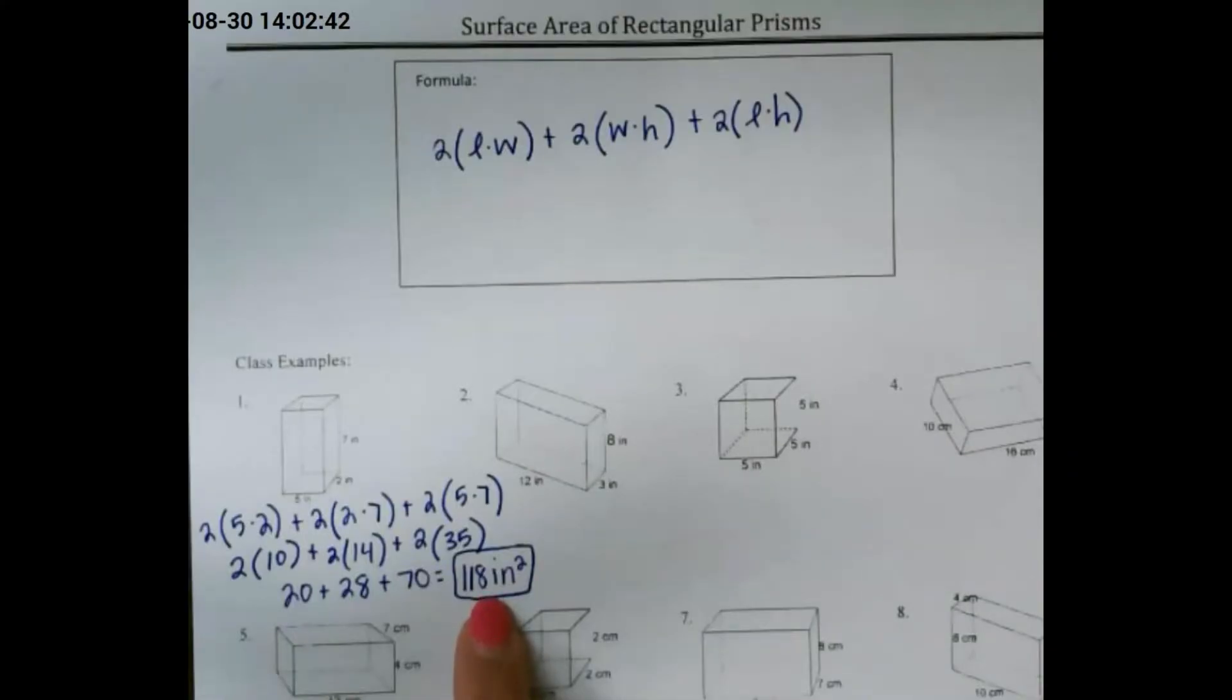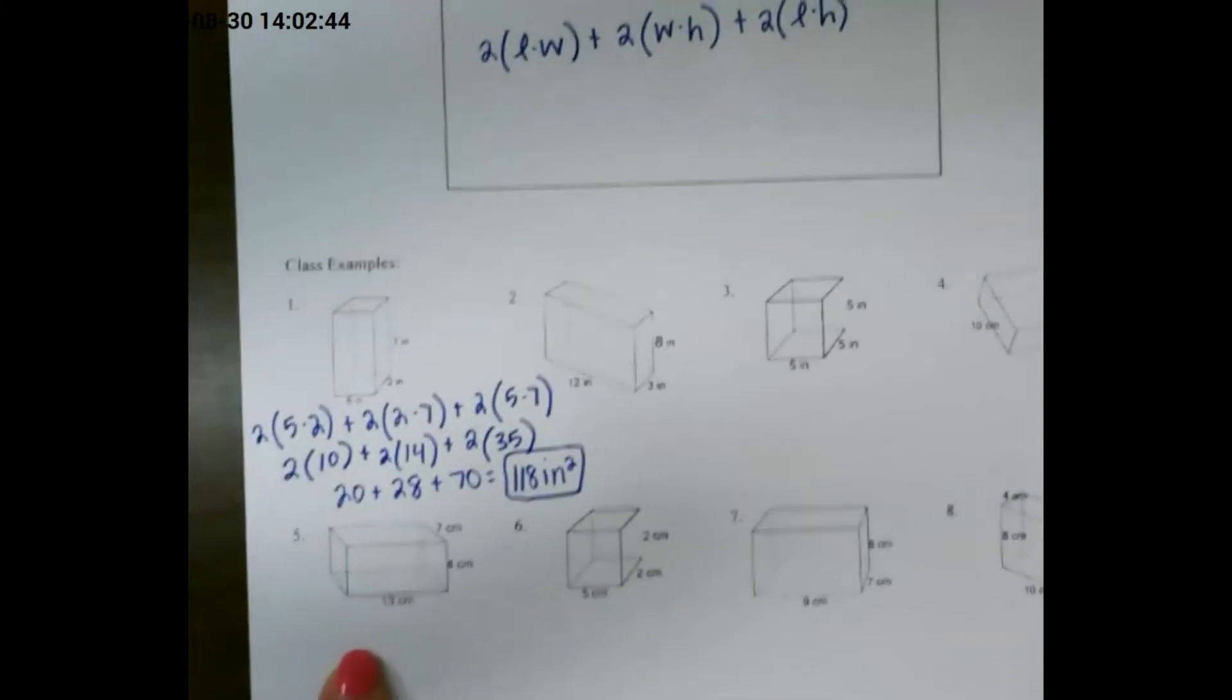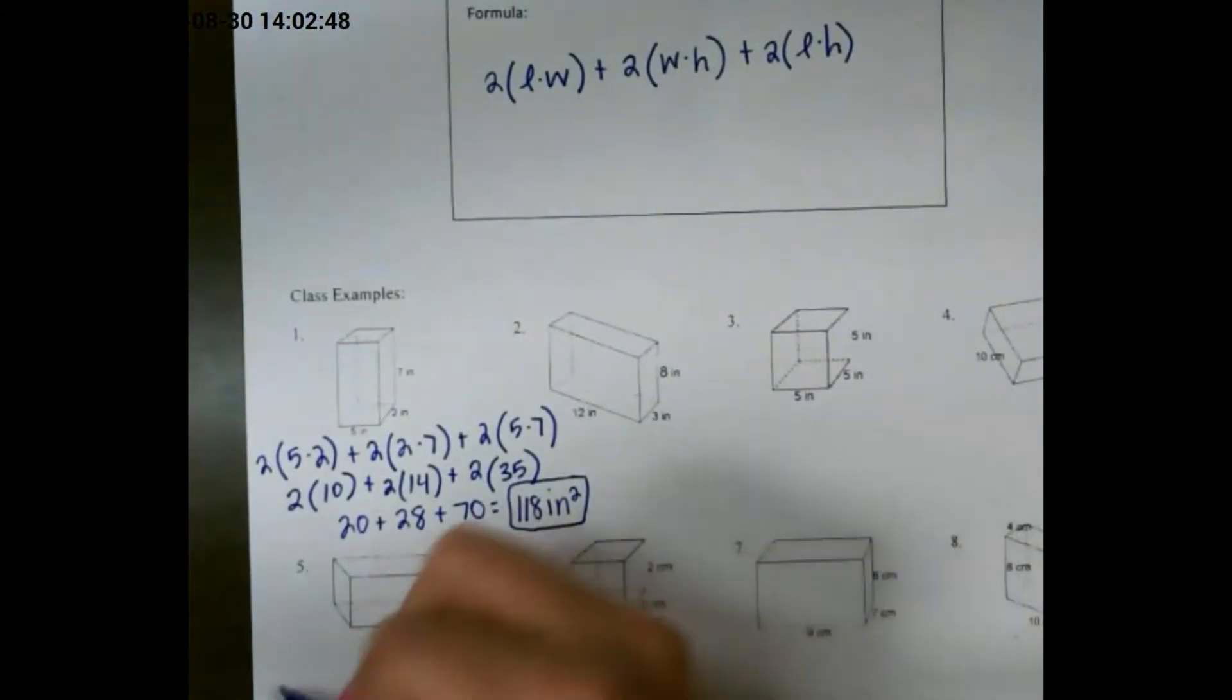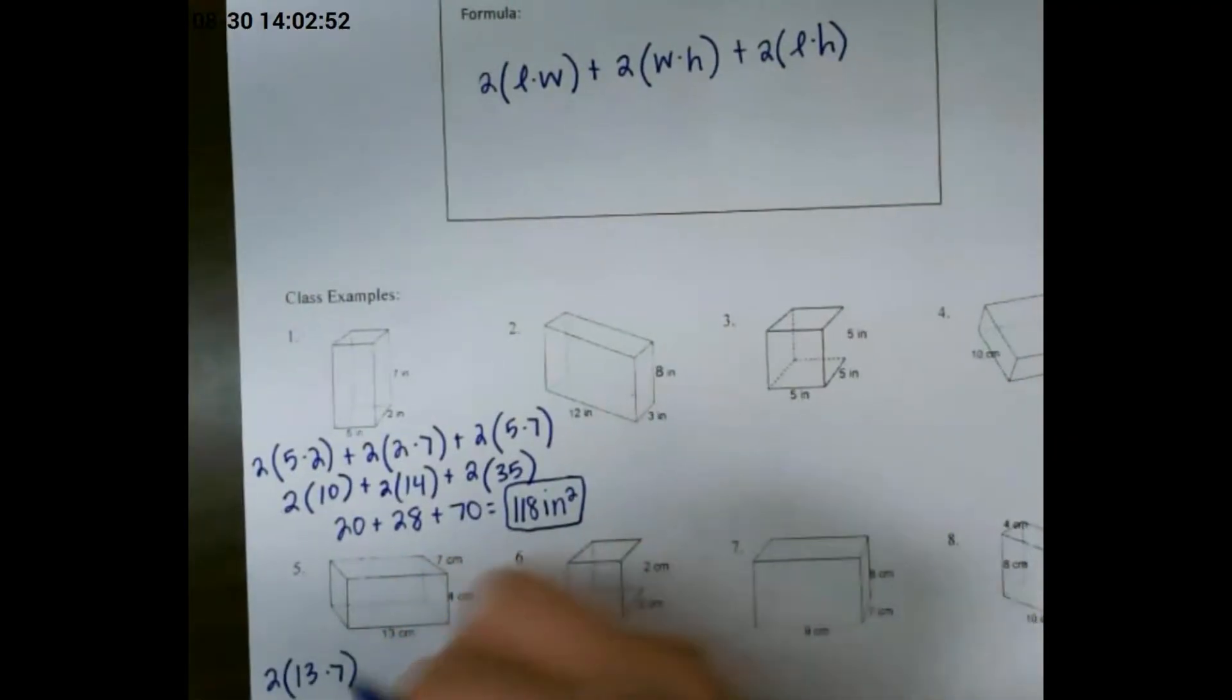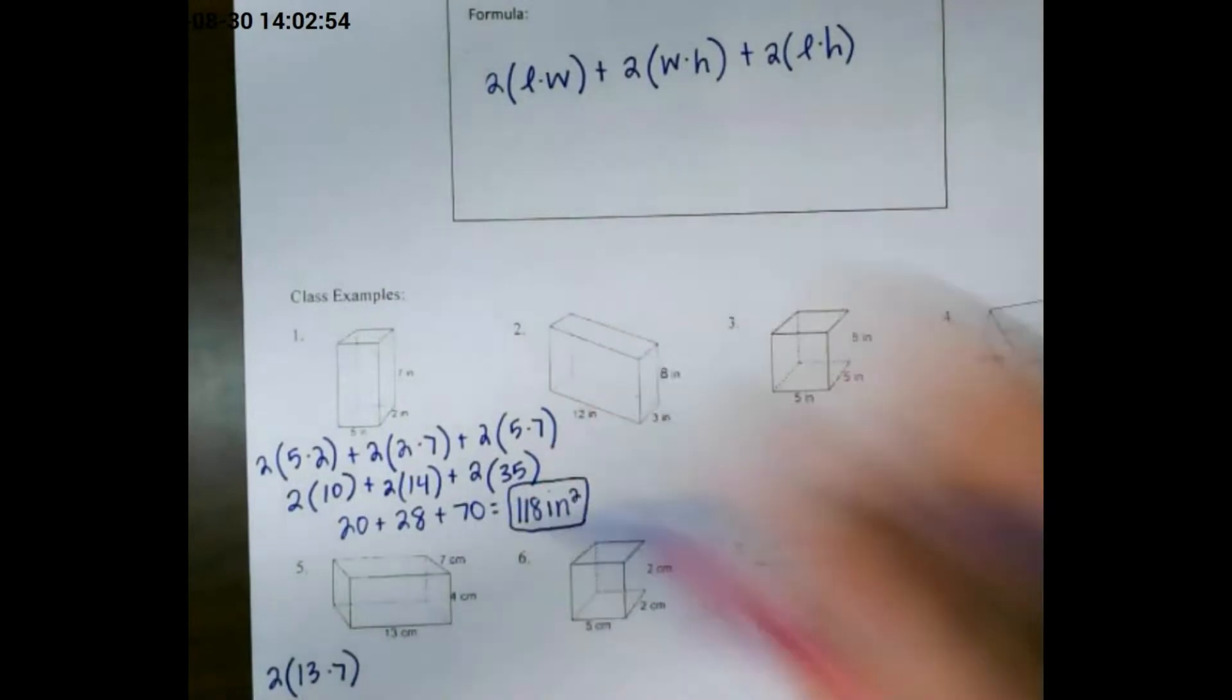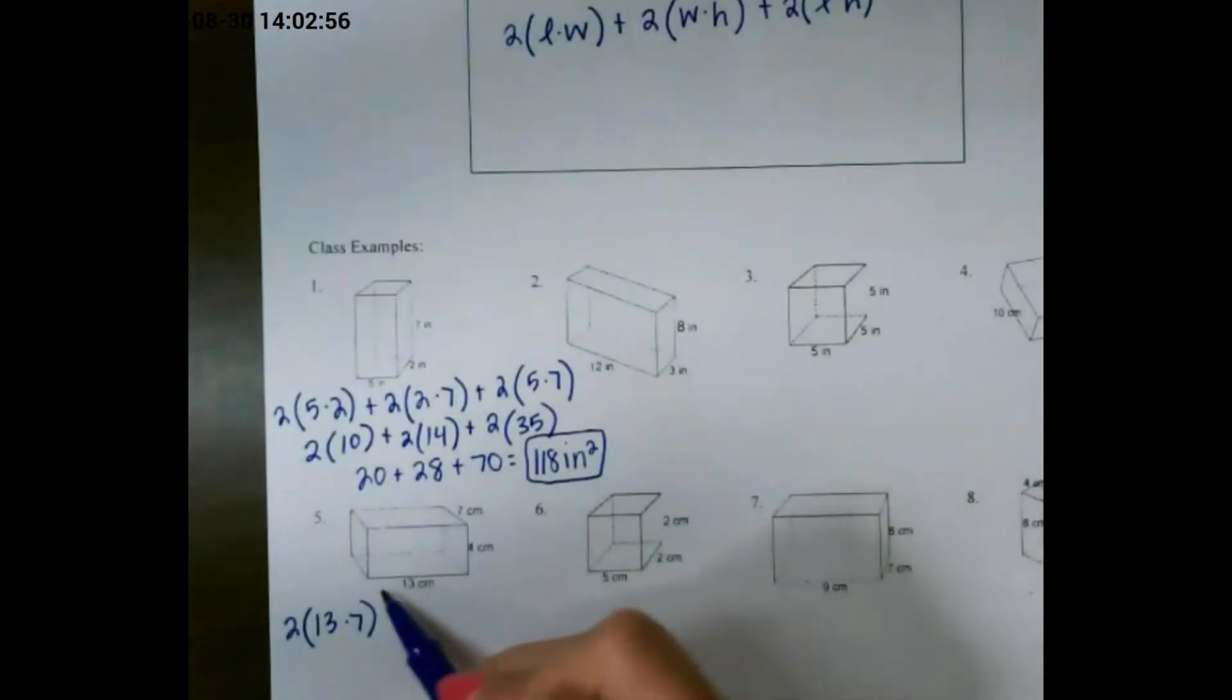Let's look at another example. Again, we use our formula up here, and we just plug our numbers in. 2 of length times width. This time our width is up on the top. Length times width is going to give us the bottom and the top rectangles.